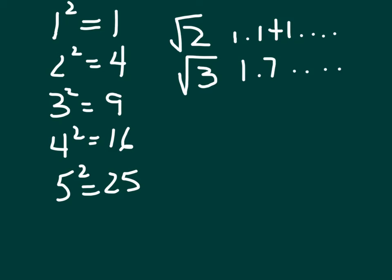It never repeats itself and it never terminates. Square root of 5, square root of 6 — these are numbers that fall in between the perfect squares.